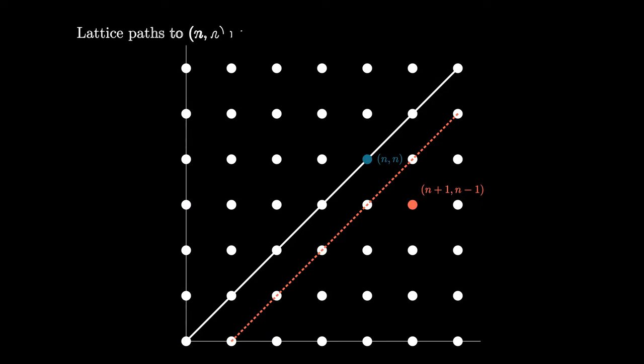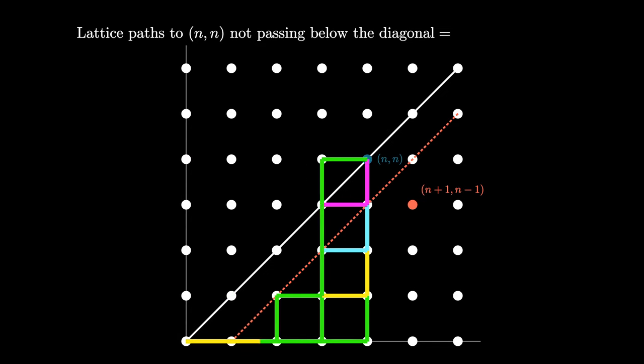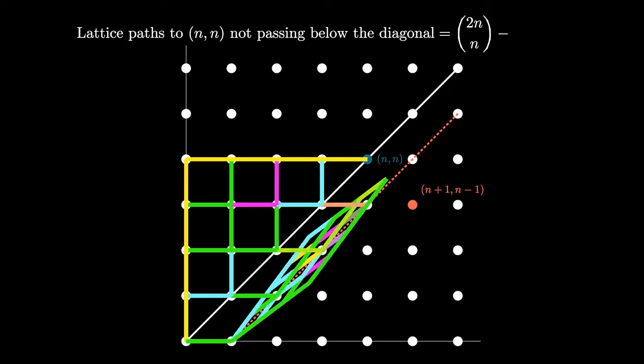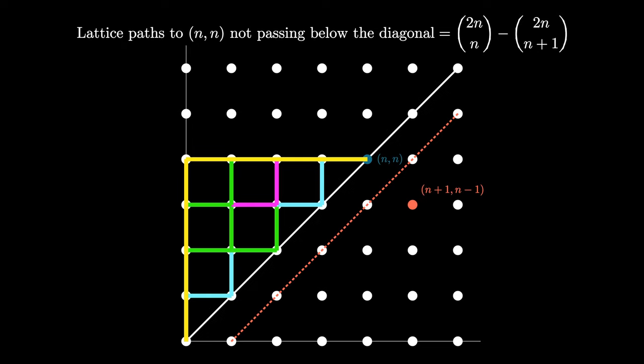But now we have our strategy to count the good lattice paths, the ones from (0,0) to (n,n) traveling northeast and not passing below the diagonal. In order to do this, we must first have all the paths that travel northeast from (0,0) to (n,n). As I mentioned before, this is counted by the binomial coefficient C(2n,n). Then we're going to subtract all of the bad paths, but we know that those correspond to the northeast lattice paths traveling from (0,0) to (n+1, n-1), which is also counted by the binomial coefficient C(2n, n+1).